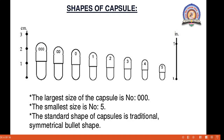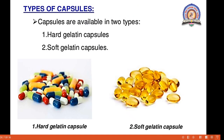These capsules are available in different shapes. The largest size is denoted by the number 000, and the smallest size is denoted by number 5. The standard shapes of the capsule are traditional, symmetrical, and bullet shape. So in a variety of shapes, these capsules are available.